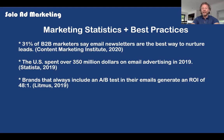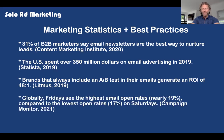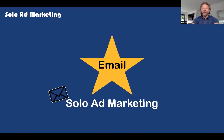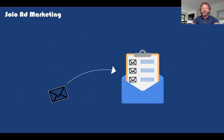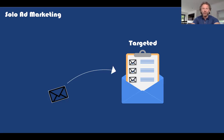The US spent over $350 million on email advertising in 2019. Brands that always include an A/B test in their emails generate a return on investment of 48 to 1 — not bad. Globally, Fridays see the highest email open rates at nearly 19%, compared to the lowest of 17% which come on Saturdays. So email is a star performer, particularly solo ad marketing — you can take an email, package what you've got, package your ad, and send it directly to a targeted list of people who are already interested in exactly what you have to offer.